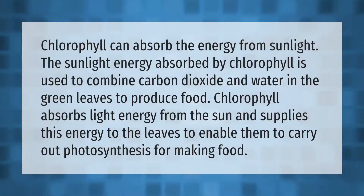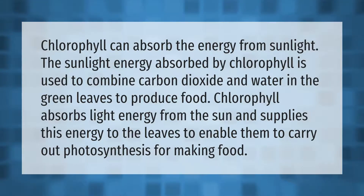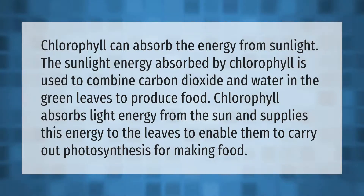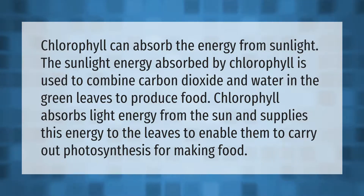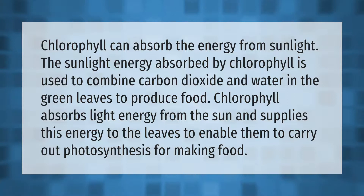Chlorophyll can absorb the energy from sunlight. The sunlight energy absorbed by chlorophyll is used to combine carbon dioxide and water in the green leaves to produce food. Chlorophyll absorbs light energy from the sun and supplies this energy to the leaves to enable them to carry out photosynthesis.